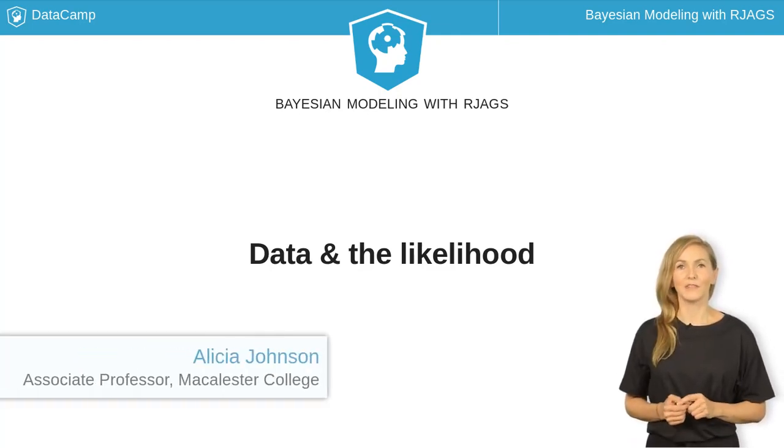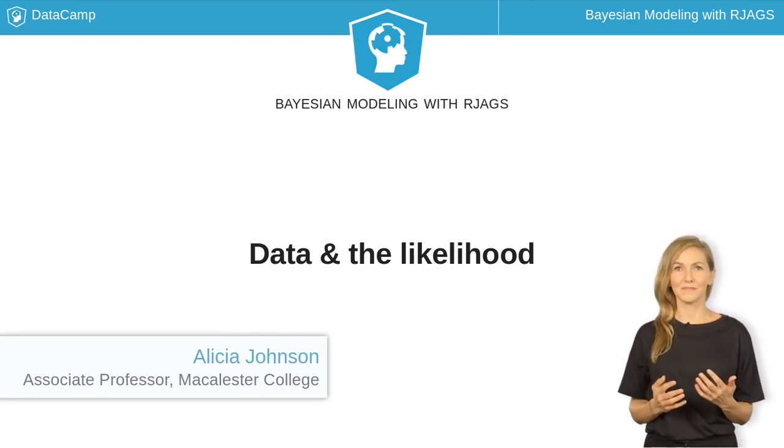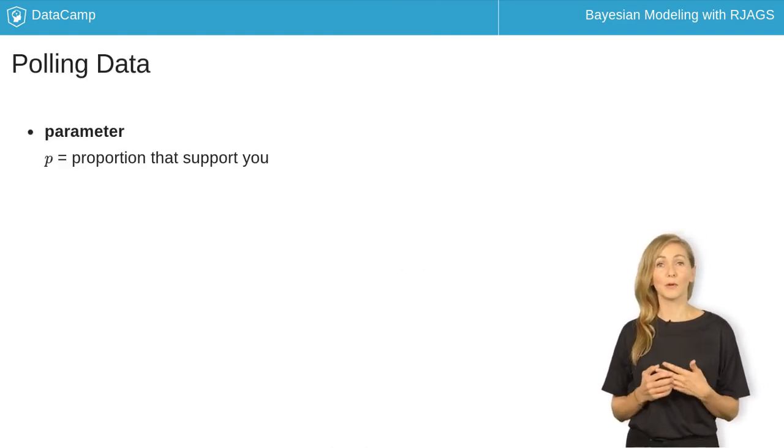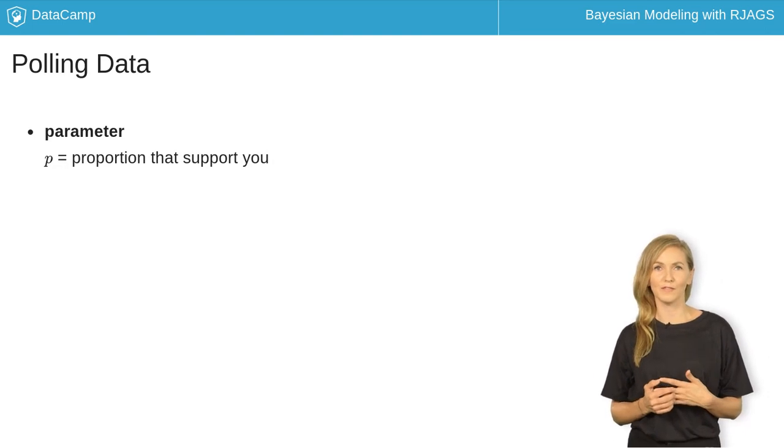Now that you've constructed a prior model of your support in the upcoming election, let's turn to the next important piece of a Bayesian analysis: the data. In your quest for election to public office, recall that parameter p denotes the underlying proportion of voters that support you.